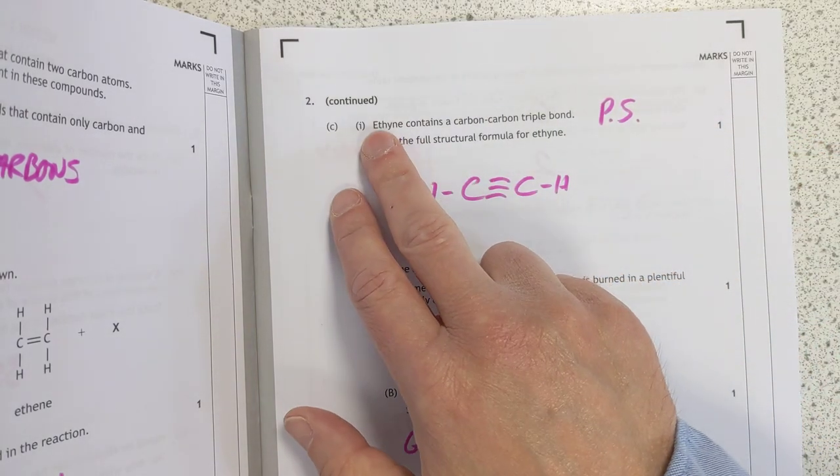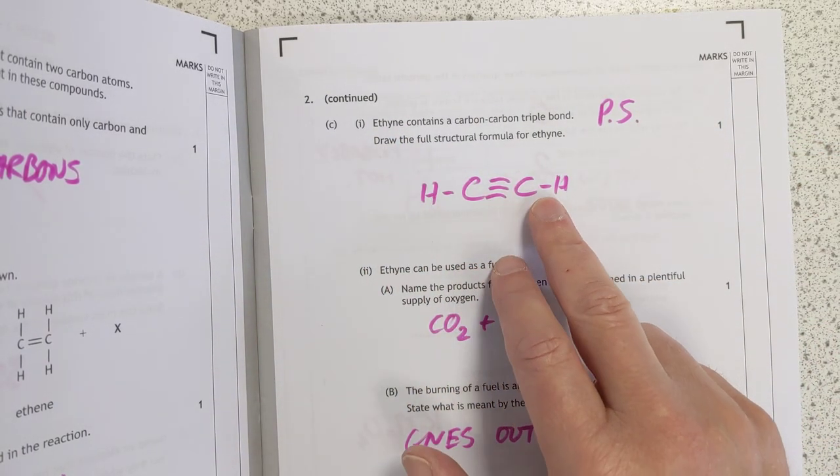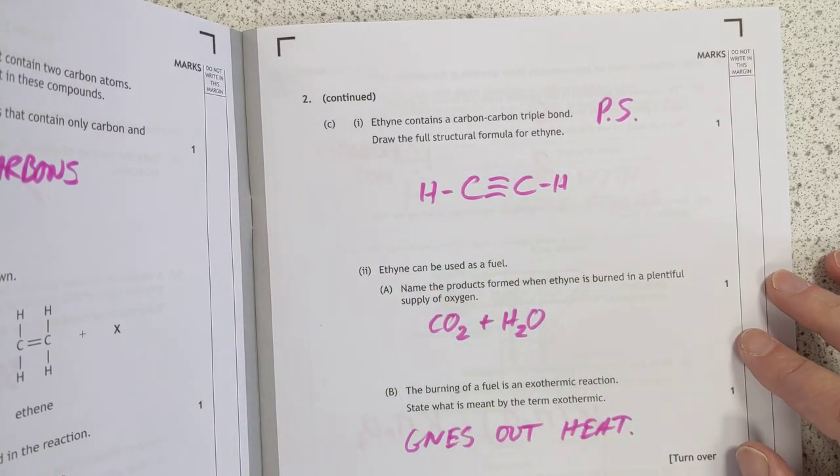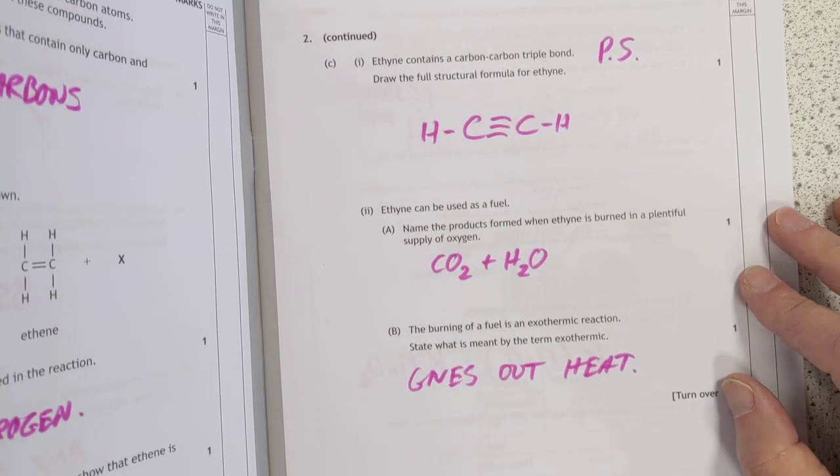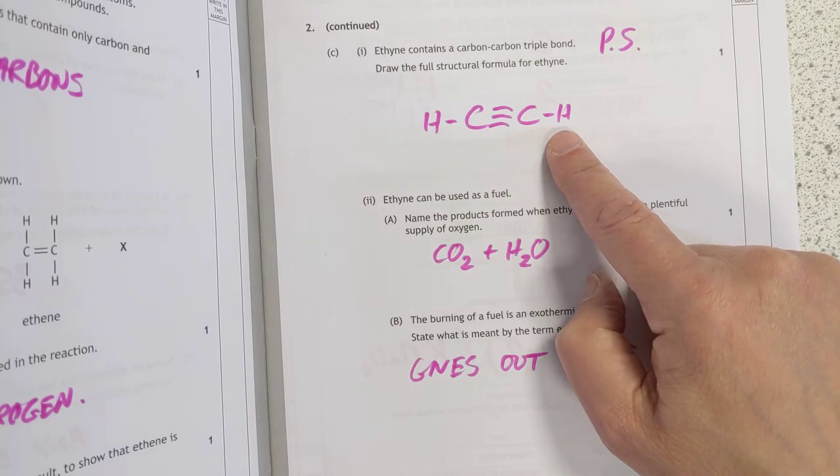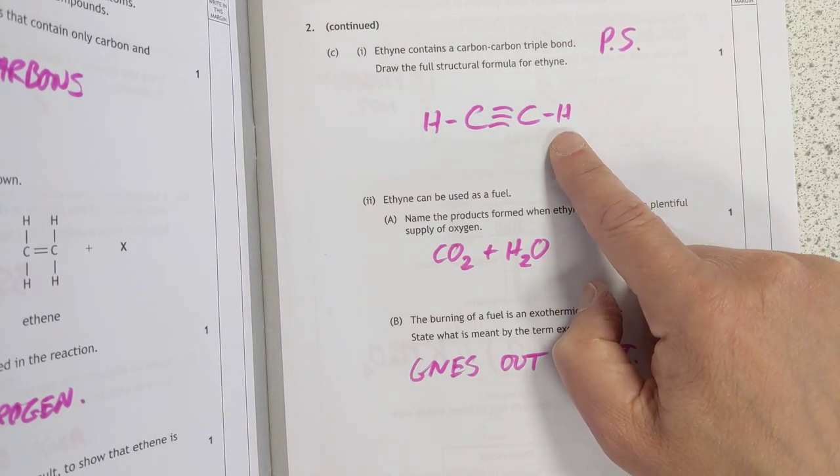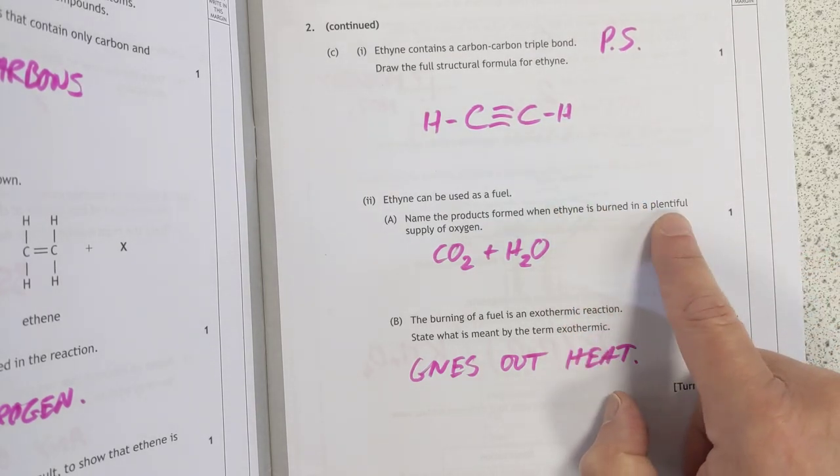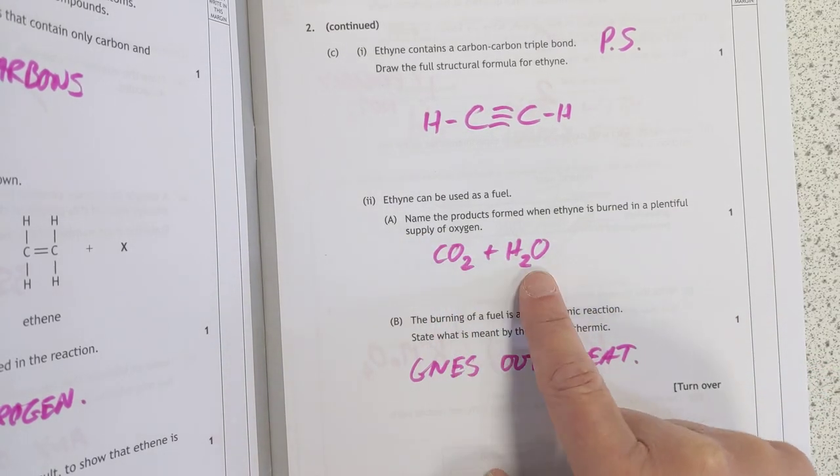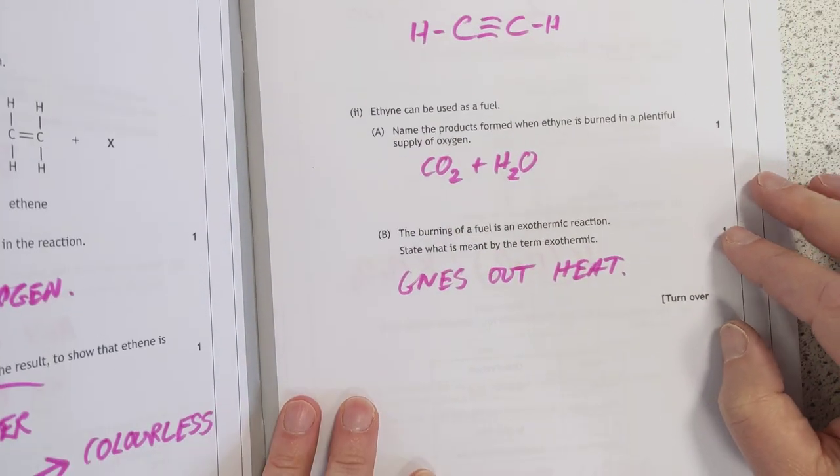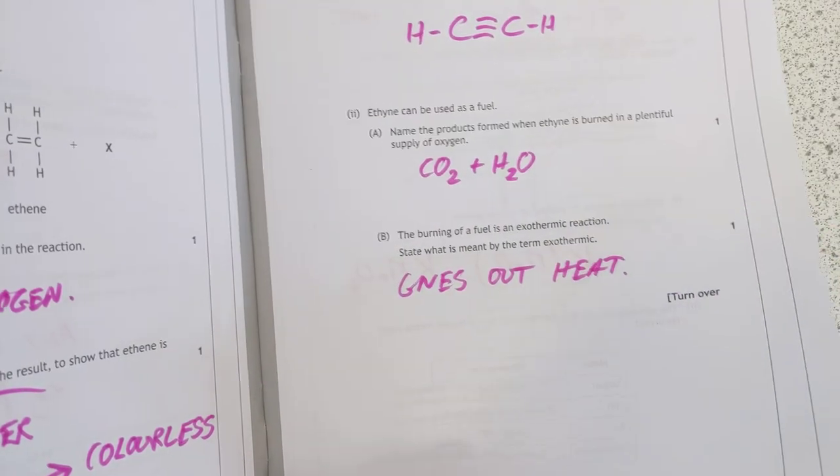Problem solving. We've never heard of ethane, but if it's got a triple bond between carbons, that only leaves one bond each, that must be the full structural formula for ethane. You can burn it, absolutely. It takes a heck of a lot of oxygen, but you can burn it completely. That's plentiful supply of oxygen. You'll make carbon dioxide and water, just like any other alkane or alkene. Burning exothermic gives out heat.